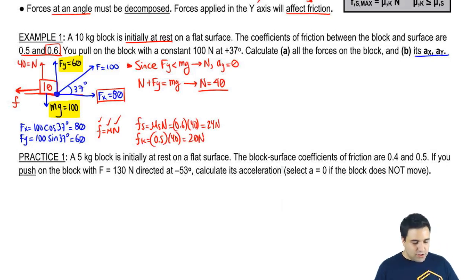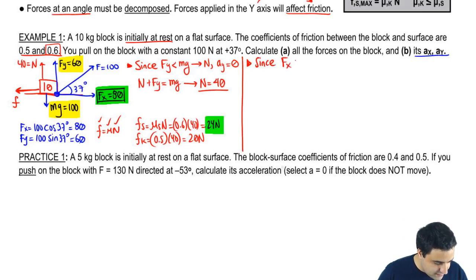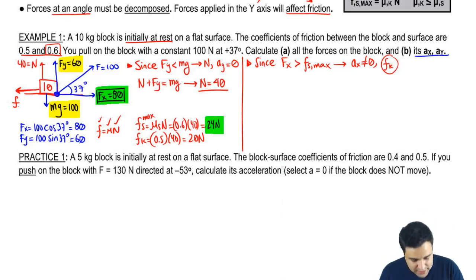To determine if it moves, I have to see, is this number greater than this number? And it is. So again, here I can write, since Fx is greater than static friction max, remember, this is my static friction max, right? This means that there will be an acceleration in the x-axis. The acceleration in the x-axis is not zero. This object will move. It also means that I'm going up against kinetic friction instead. So this will be kinetic friction because I'm pulling hard enough. So it will actually be 20 over here.